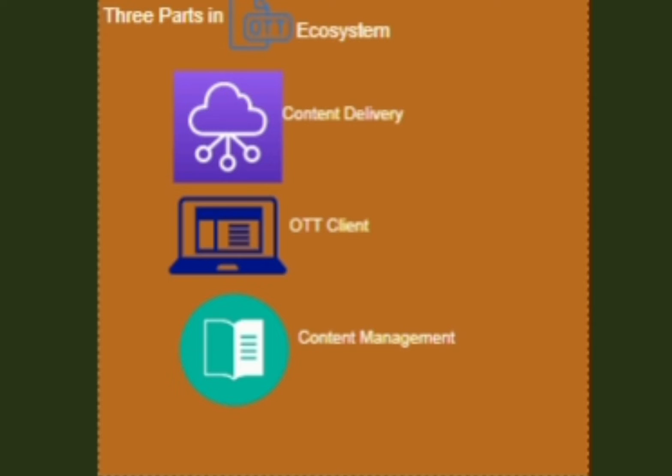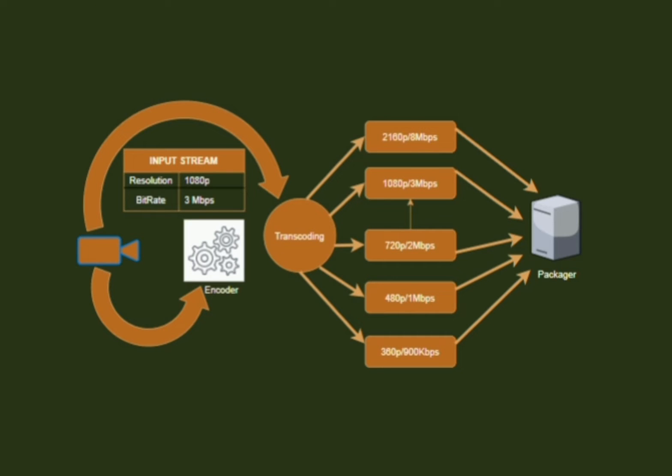We divide the entire OTT ecosystem into three parts: content delivery, content management, and OTT clients. First, we check where content delivery starts — it starts at the DTV backend. In the DTV backend unit we get the linear world contents, and the transcoding farm will convert the received input into audio and video chunks.